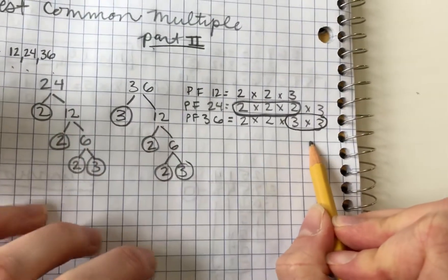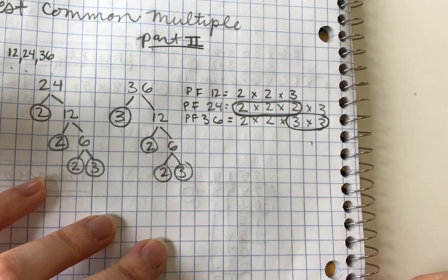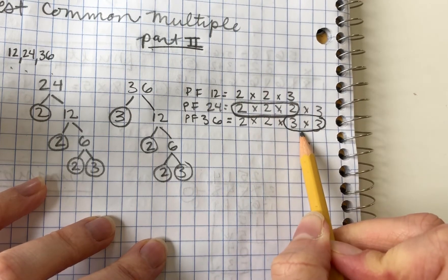So in order to find the lowest common multiple of 12, 24, and 36, we multiply these numbers together.